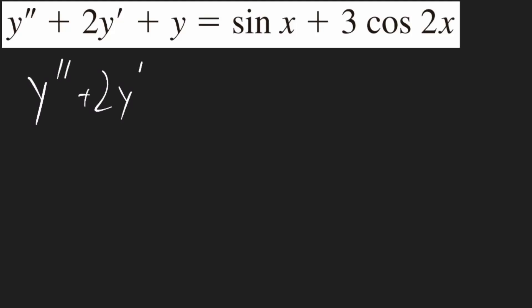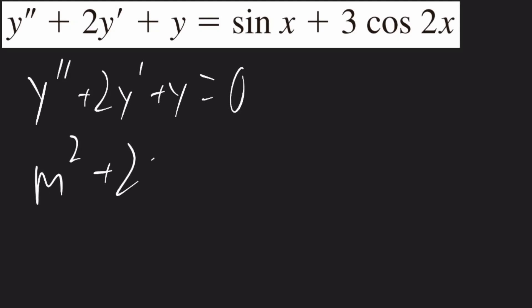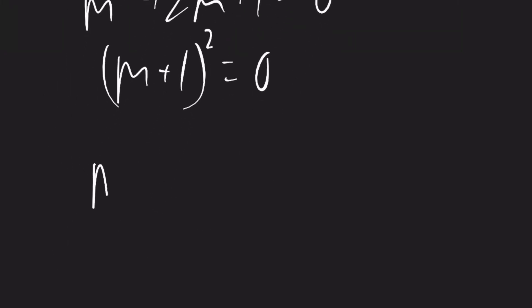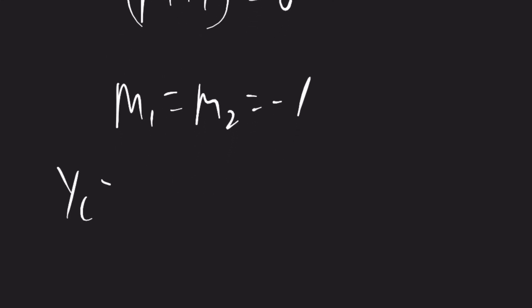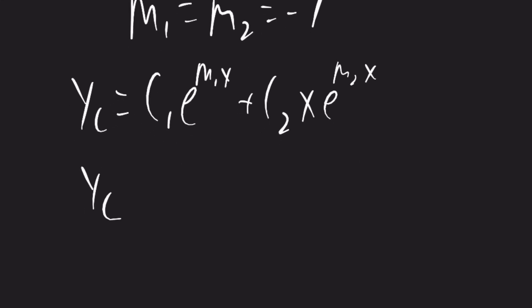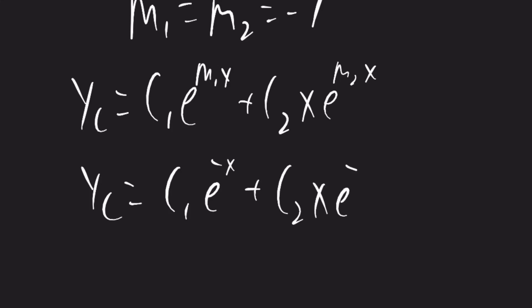For this problem, I'll start by treating it as a homogeneous differential equation. We'll have y double prime plus two times y prime plus y is equal to zero. So the auxiliary equation will be m squared plus two times m plus one is equal to zero. This will factor to m plus one squared is equal to zero. So the two roots m1 and m2 are both going to be equal to negative one. So the complementary solution yc is going to be c1 times e to the negative x plus c2 times x times e to the negative x.